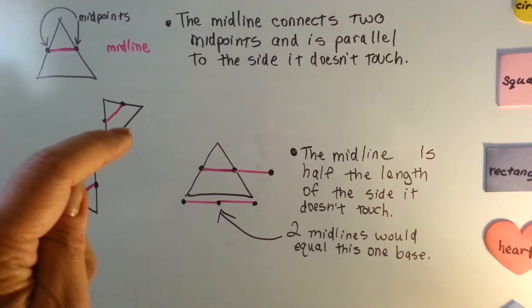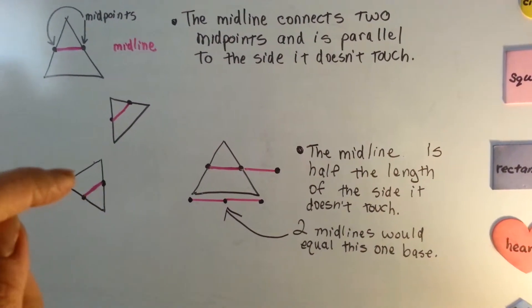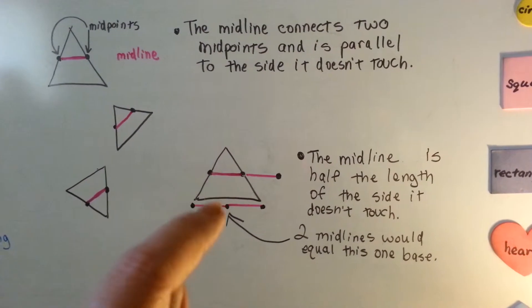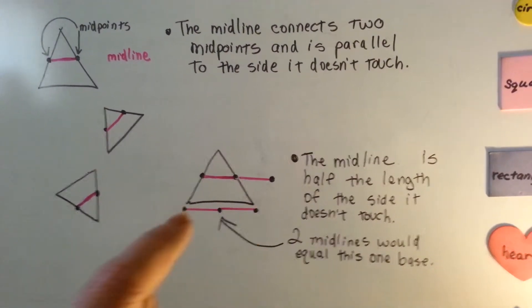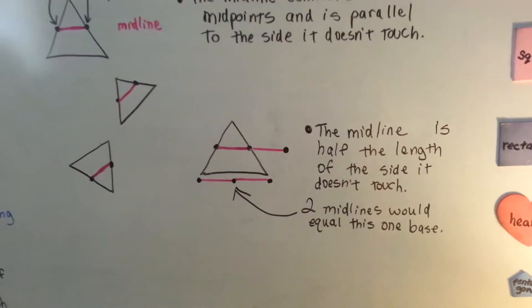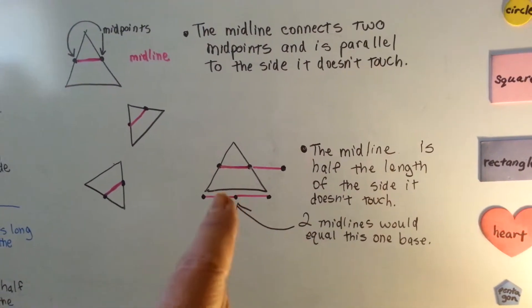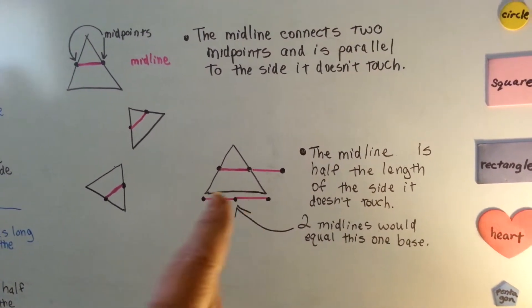This one is half the length of that. This one is half the length of that. It's half the length of the big line that it's not touching. If you multiplied it by two, it would equal the line it's not touching.